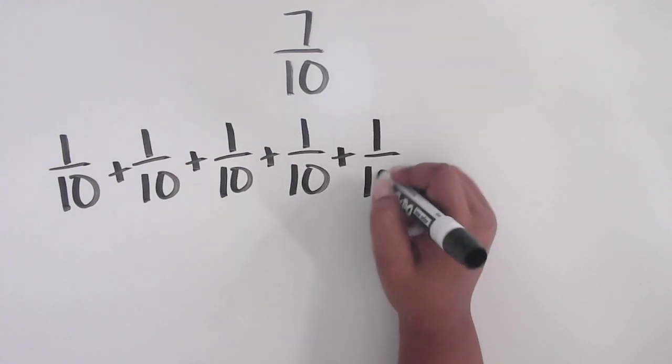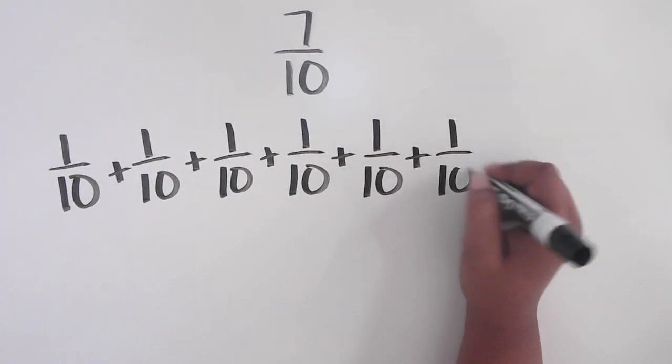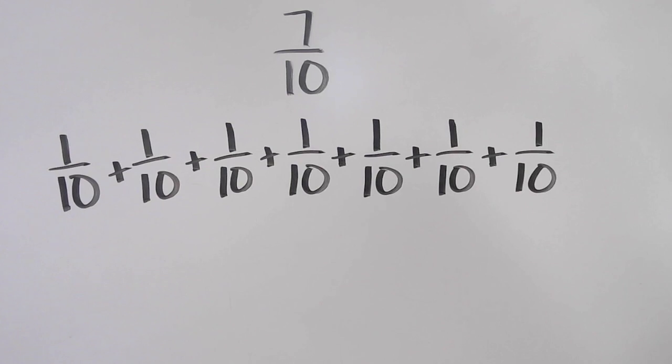How many 1 tenths need to be combined to make 7 tenths? Just like 7 ones combined make up the number 7, 7 one tenths combined make up the fraction 7 tenths.